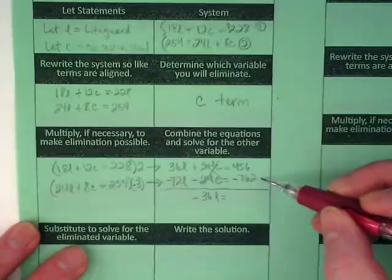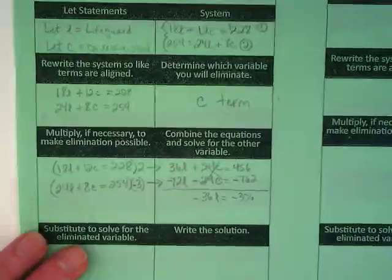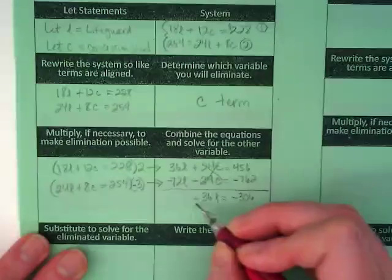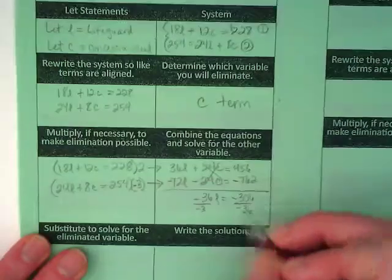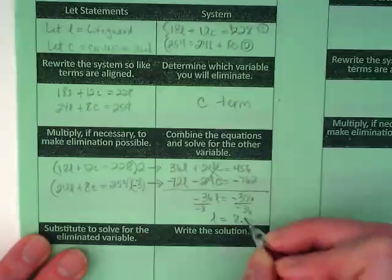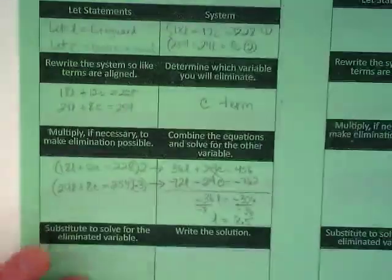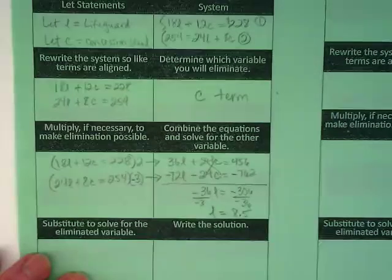456 minus 762 gives us negative 306. And when I divide both of those by negative 36, I get L is equal to 8.5. So how much money does she make lifeguarding? $8.50.